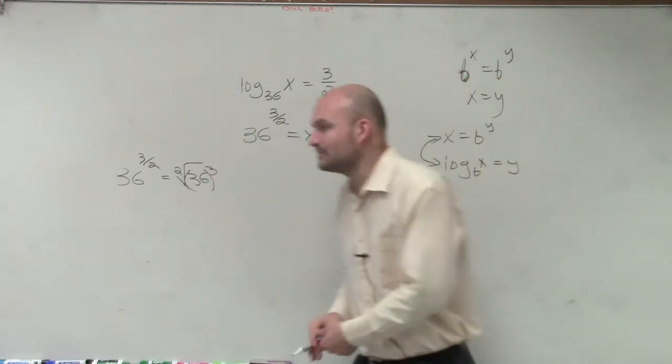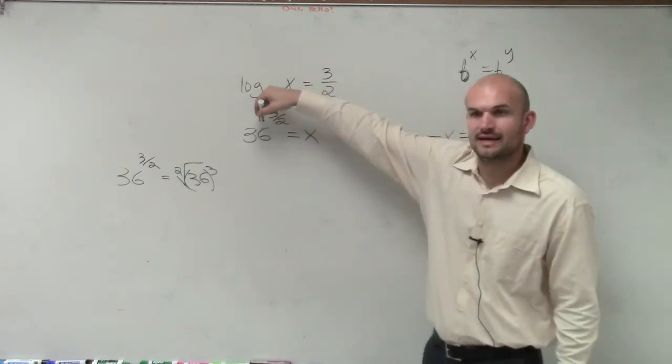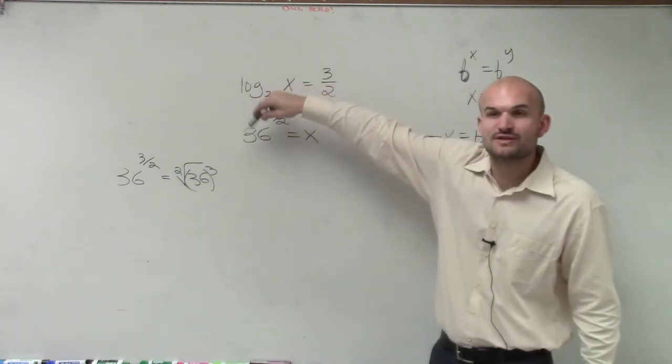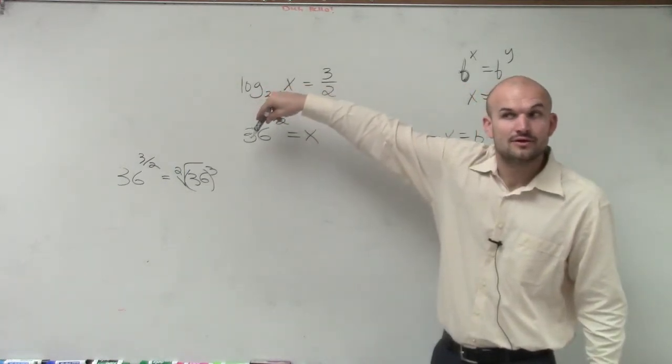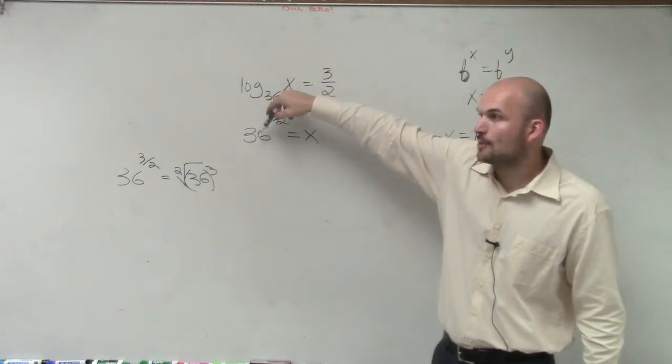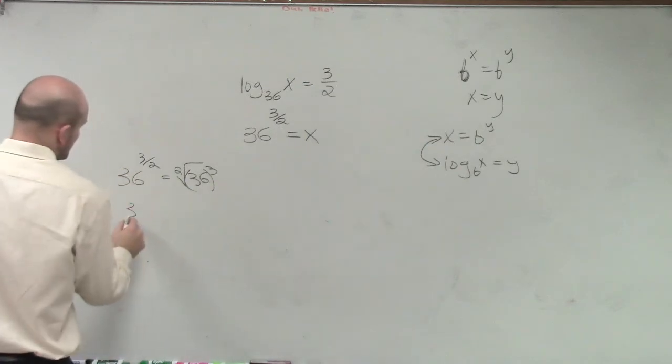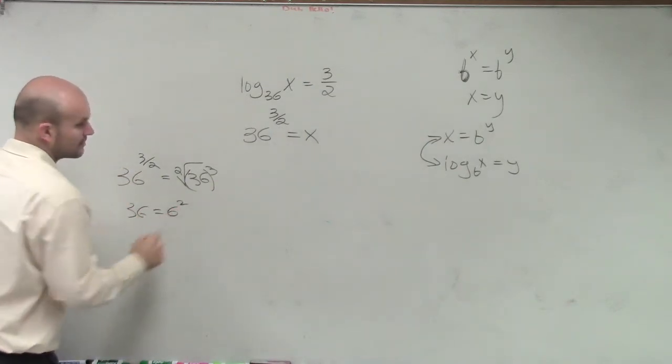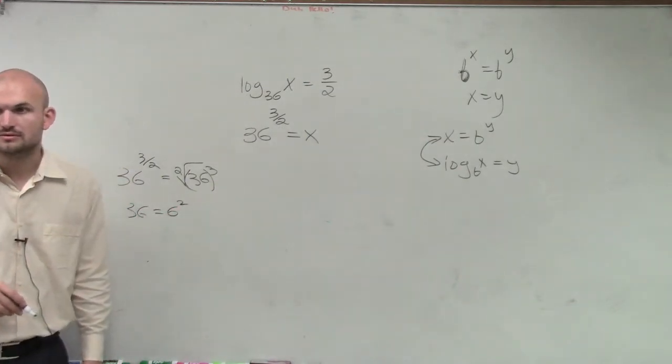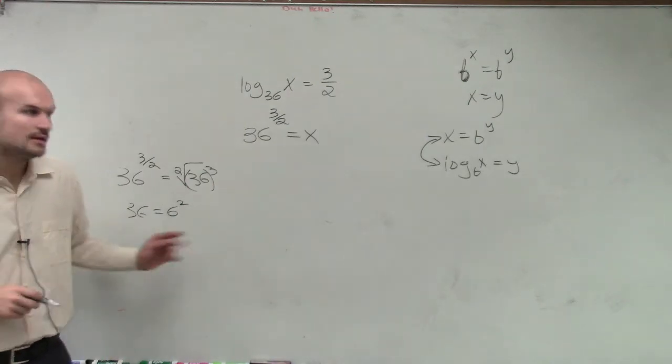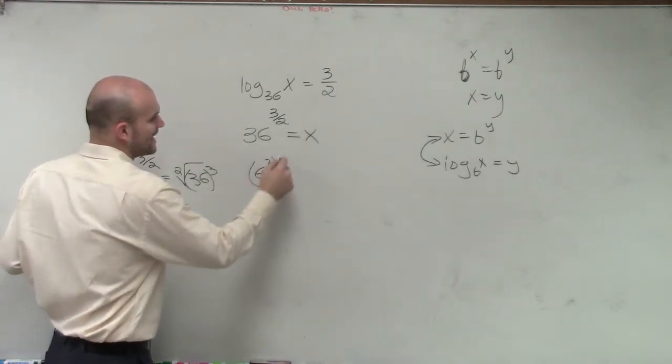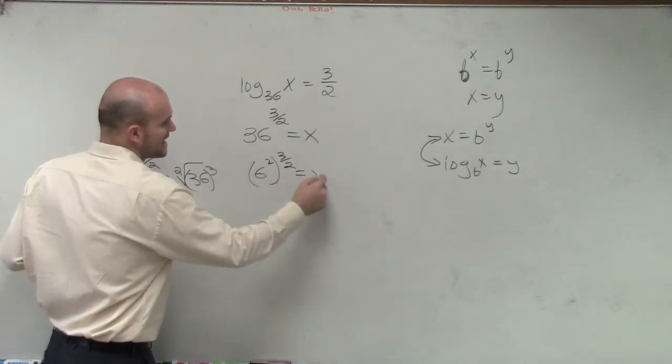However, what were some other ways that we learned how to simplify this? Remember, we can always rewrite our base into a different power. So what about if I wrote 36 is equal to 6 squared? Will that work? Yeah. So how about I write 6 squared raised to the 3 halves power equals x.